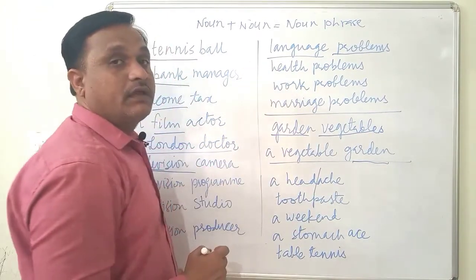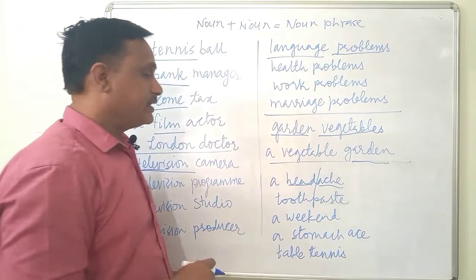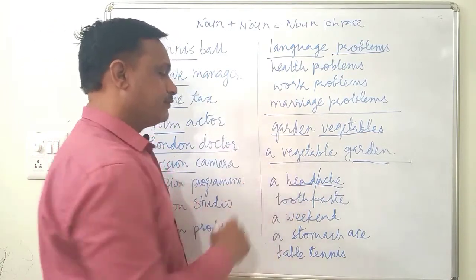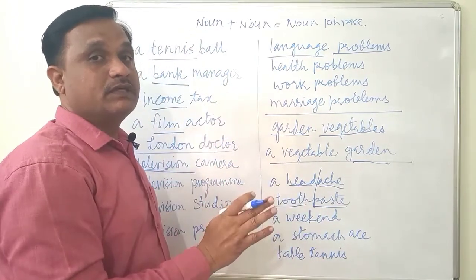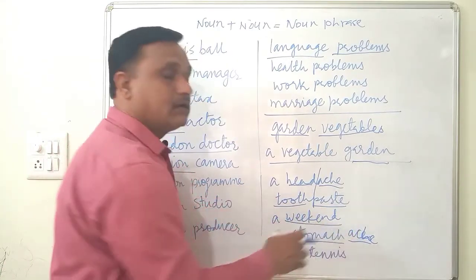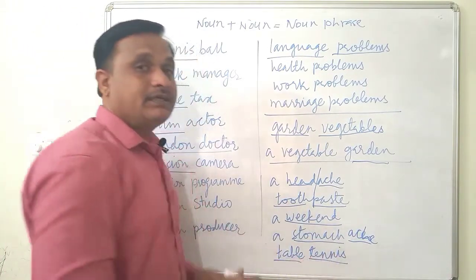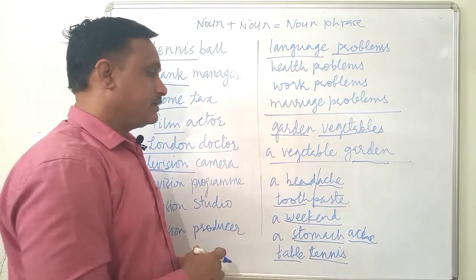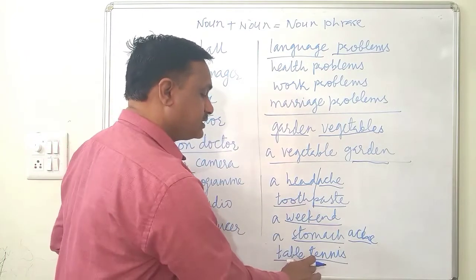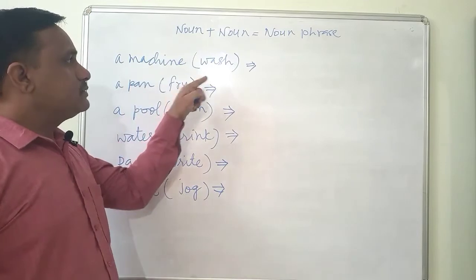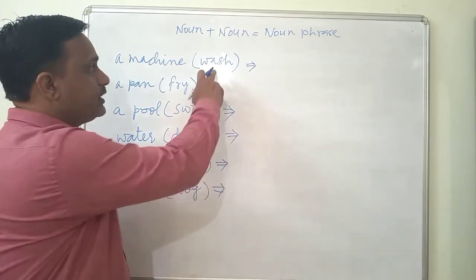Another thing: if you break the word 'egghead', you get 'egg' and 'head' — two words combined to form one word. Similarly, 'toothpaste' is written as a single word. 'Weekend' and 'stomach ache' are written separately. 'Table tennis' uses two separate nouns brought together. So sometimes two nouns are written together to form a single word, and sometimes they are written separately.